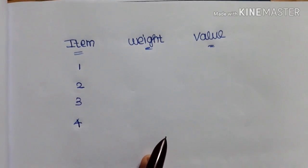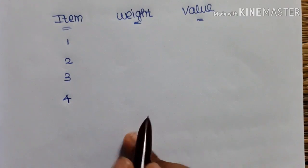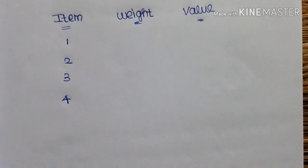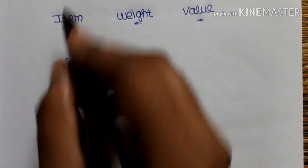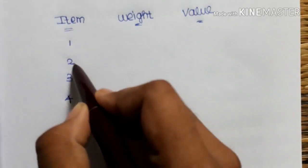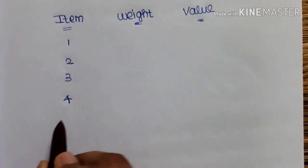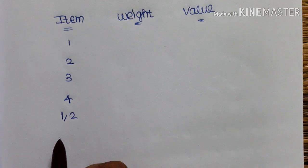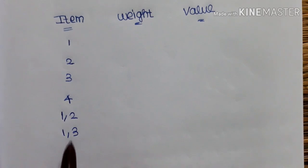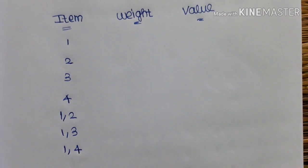We have 4 items: 1, 2, 3, 4. Next, we will solve the combinations: 1-2, 1-3, 1-4. So the combinations are: 1-2, 1-3, 1-4.